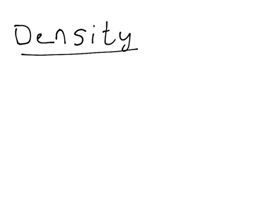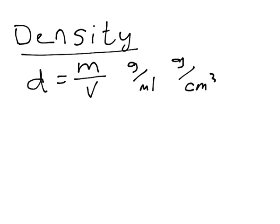The last topic will be density. Density refers to the amount of matter per unit volume, which means density equals mass over volume. Its units will usually be grams over milliliters, or grams over centimeters squared. I forgot to mention, volume is usually measured in milliliters or centimeters squared. They are the same thing.